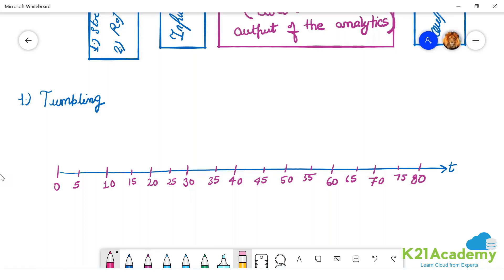Tumbling window - so we are creating now a tumbling window. You can give here seconds, minutes, hours, and days. Let's say minutes, and the tumbling window is of 5 minutes. It is a non-overlapping window.